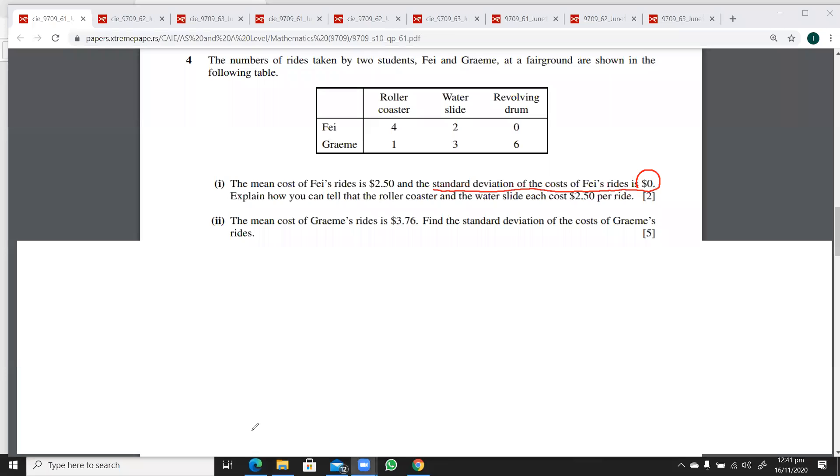The second part says the mean cost is $3.76. We have to find Graeme's standard deviation. He has one of this, three of these, and six of these.